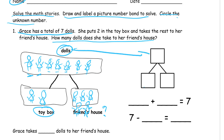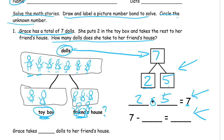So dolls — that's going to go here because it's the number that we took apart, the total of seven. We took it into two parts: the toy box and the friend's house. The toy box was two and the friend's house we count to five. We can write this as an addition sentence: the two parts, two plus five, make the total seven. And in subtraction, we take the total apart: seven minus two equals five, which was the unknown. So Grace takes five dolls to her friend's house.